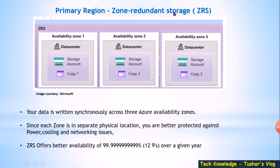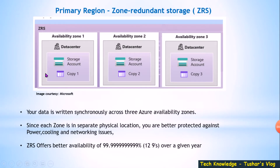The next one under primary region is Zone Redundant Storage (ZRS). In this case, instead of data being written within the same data center, it will be written across three data centers. Copy one is in the first data center, copy two in the second, and copy three in the third — but all three copies are within the same region. So if your data is in Australia East, all three copies are in Australia East but across three data centers. With this, even if there is a power failure, cooling failure, or networking issues in one data center, you are still protected.